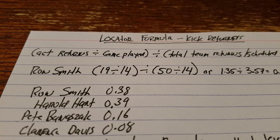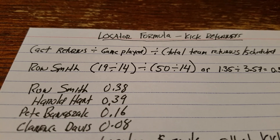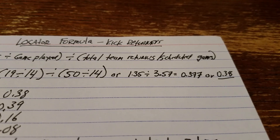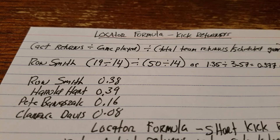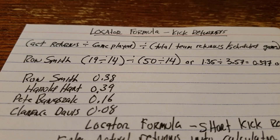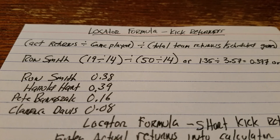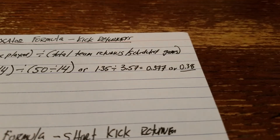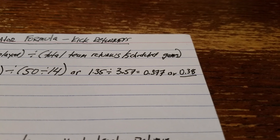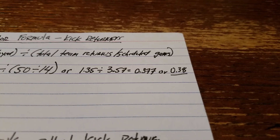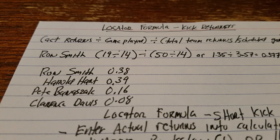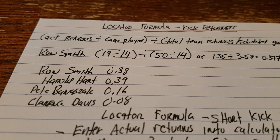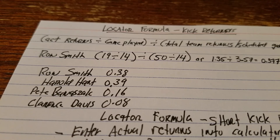Actual returns divided by their games played, and then divided by the team's total returns and the scheduled games. For example, for Ron Smith, he had 19 returns and played in 14 games. The Oakland Raiders had a team total of 50 returns, and there were 14 scheduled games. Here's the actual math, and it comes to 0.38. So that is going to be Ron Smith's grade, or 0.38.